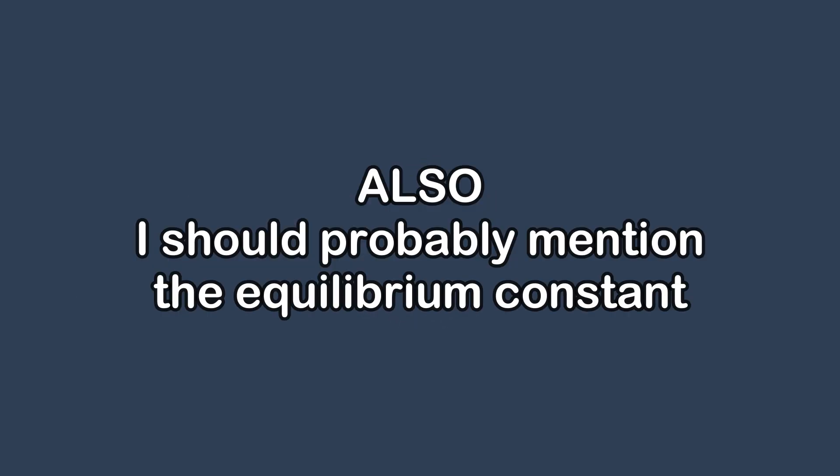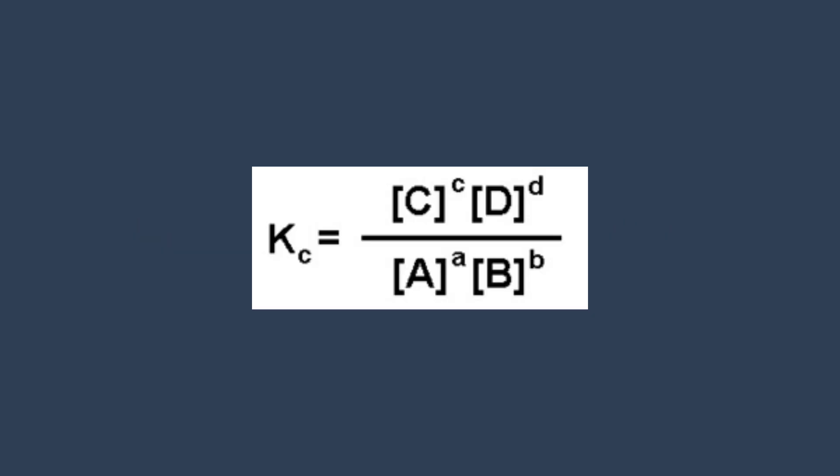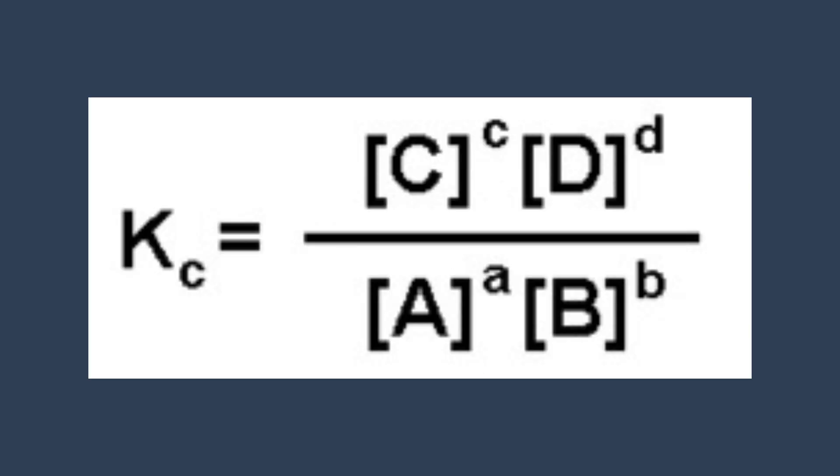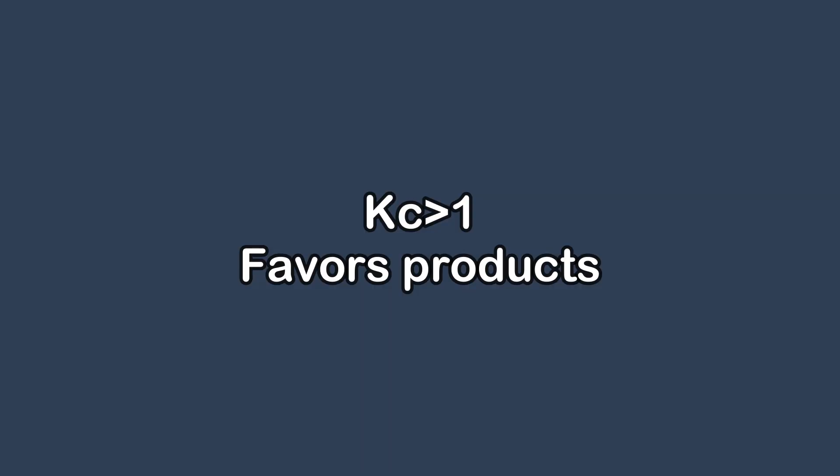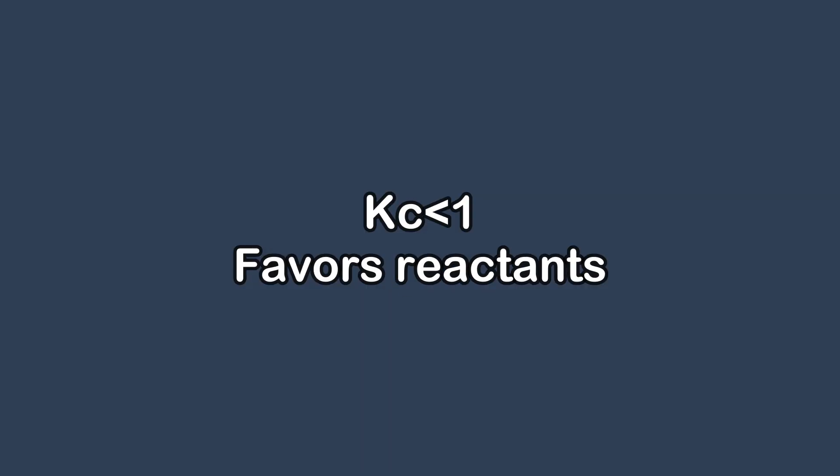Also, I should probably mention the equilibrium constant, Kc. It tells us the ratio of concentrations of products to reactants at a specific temperature. A Kc value over 1 indicates it favors the products, whereas a Kc under 1 indicates it favors the reactants.